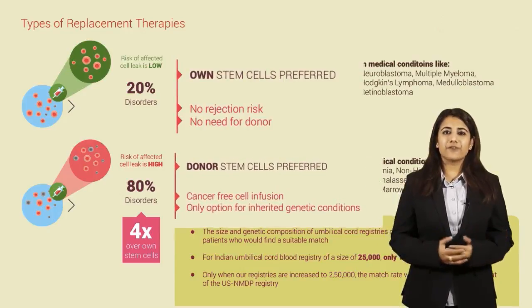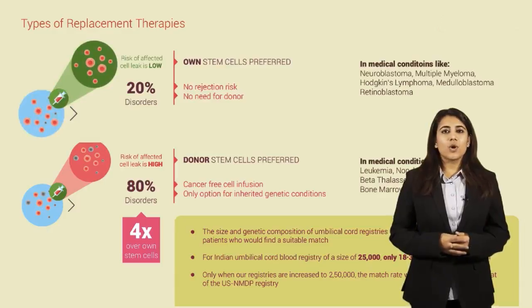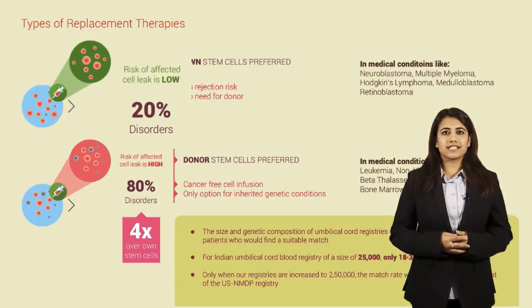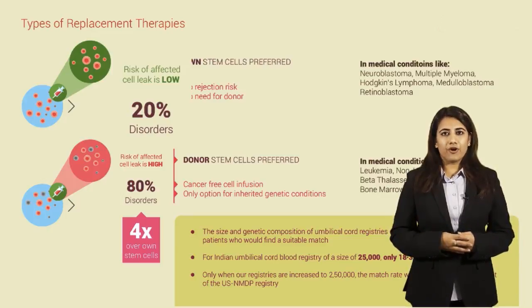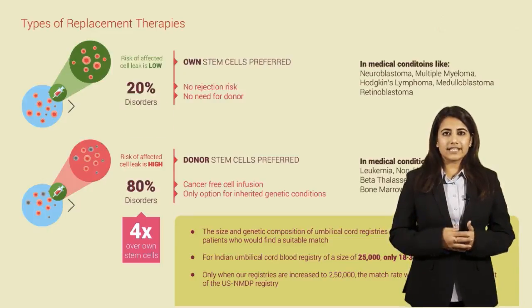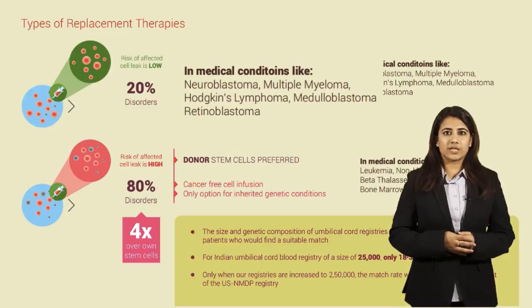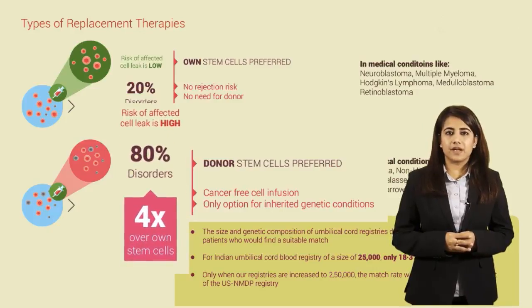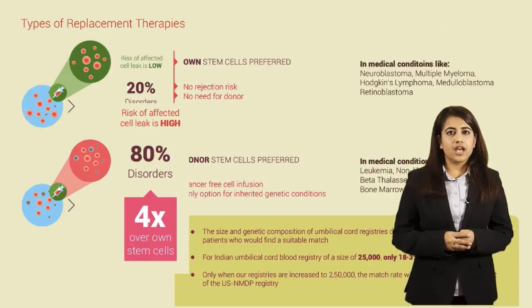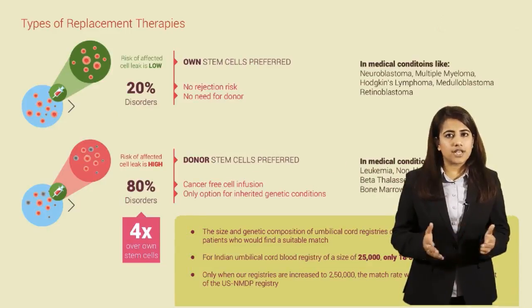The patient's own stem cells are used in conditions where there is a low chance of the affected cells spreading in the body. These types of transplants can only be performed in 20% of the cases, as the conditions where this type can be adopted are low. On the other hand, most conditions in replacement therapy require donor cells, and 80% of the patients have to depend upon a donor within the family or outside the family.